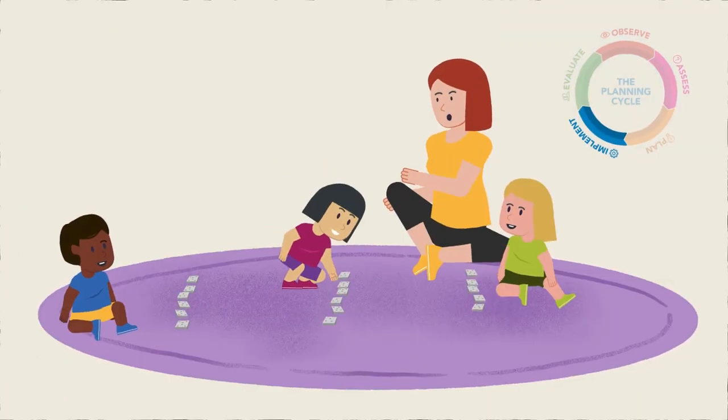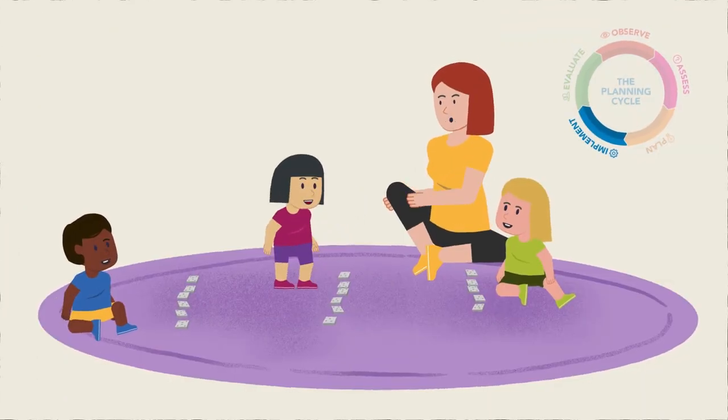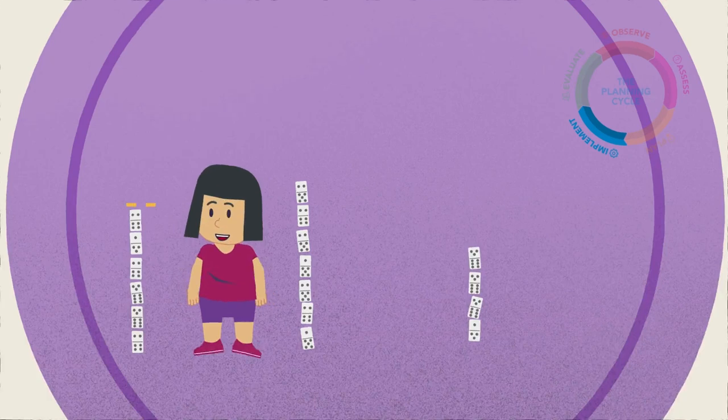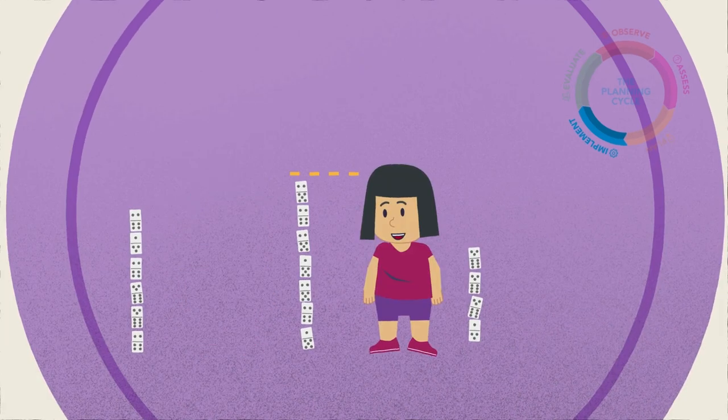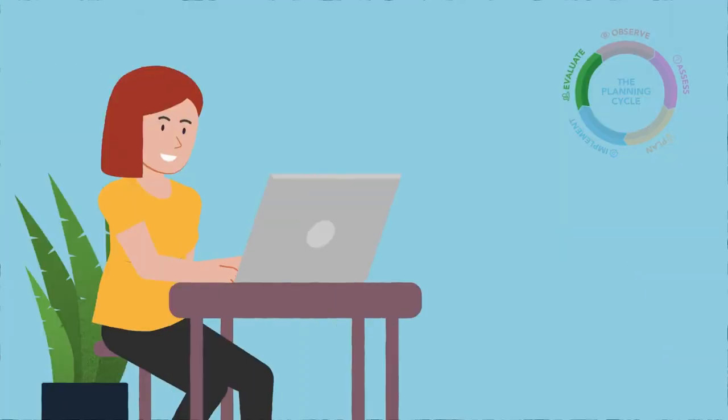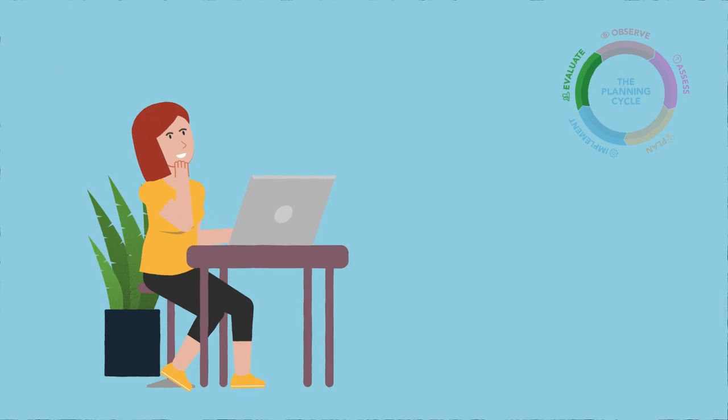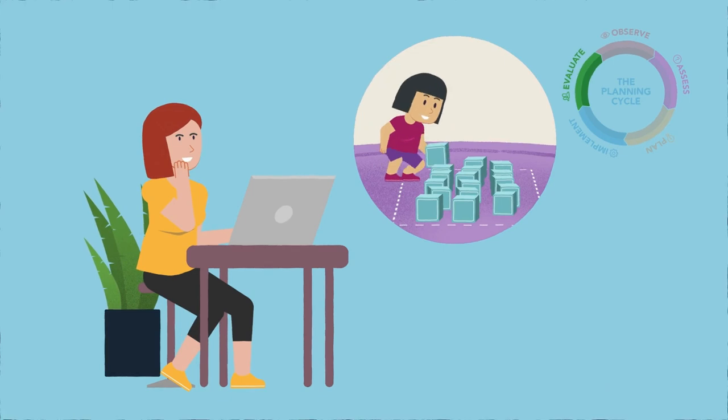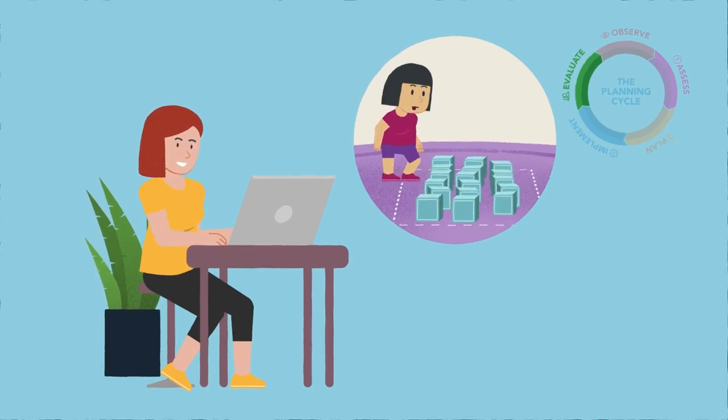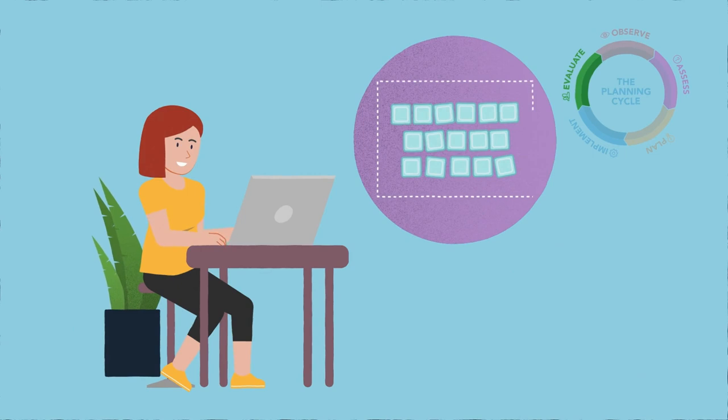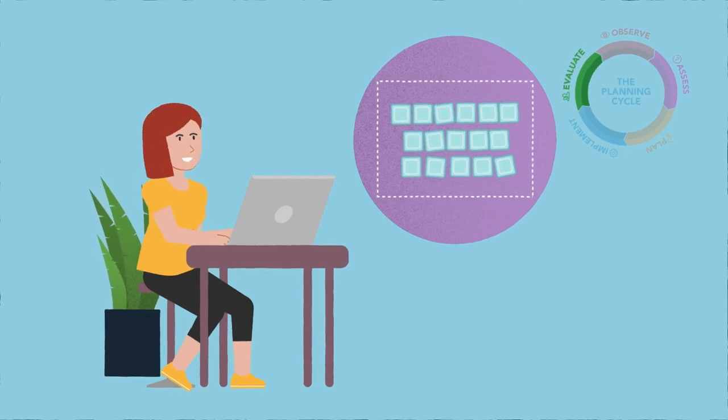The educator or teacher then implements a range of learning experiences to draw children's attention to using informal measurement tools consistently. The educator or teacher evaluates the implementation of their plan and considers learning possibilities moving forward, such as encouraging children to estimate the length of an object or area using informal measurements to check and reflect on their initial ideas.